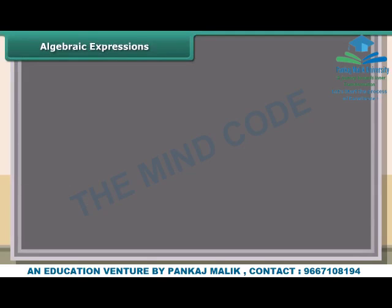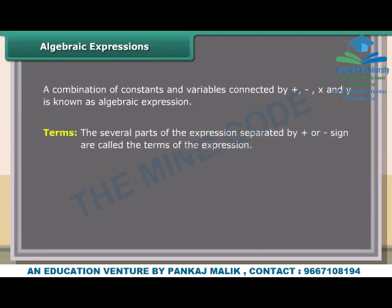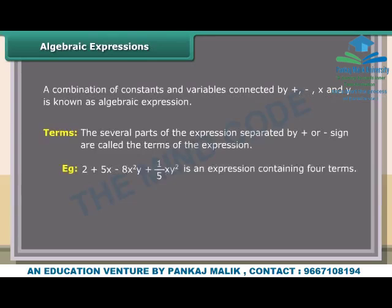Algebraic Expressions: A combination of constants and variables connected by +, −, ×, and ÷ is known as an algebraic expression. Terms: The several parts of the expression separated by plus or minus signs are called the terms of the expression. Example: 2 + 5x − 8x²y + (1/5)xy² is an expression containing four terms: 2, 5x, −8x²y, and (1/5)xy².